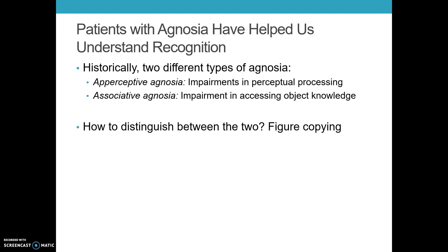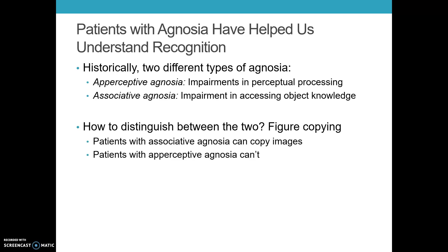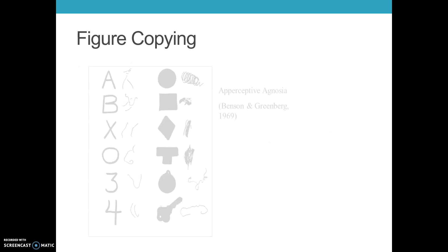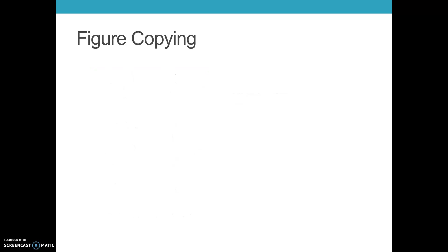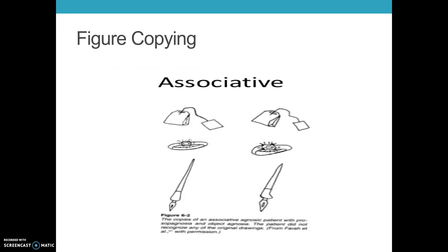One of the ways researchers have historically tried to distinguish between the two is with figure copying. Patients with associative agnosia can usually copy images — they won't recognize what they've copied, but they can do it. Patients with aperceptive agnosia really can't. Here is the case of somebody with aperceptive agnosia, and here is the case of somebody with associative agnosia where copying is intact.